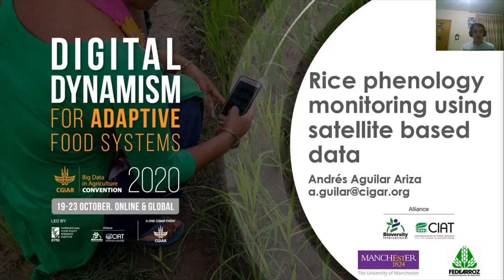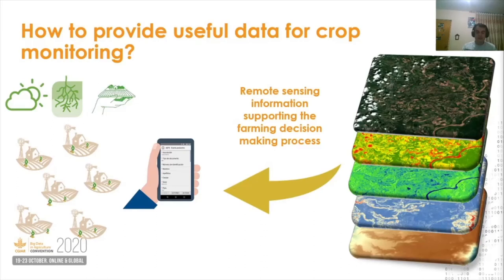One of the goals of our team is to provide site-specific recommendations to farmers through data captured from their crop events, such as climate, soil, and management practices. We have offered tools that help farmers during their decision-making process, in activities like sowing date, fertilizer amount, and cultivar to use, among others.